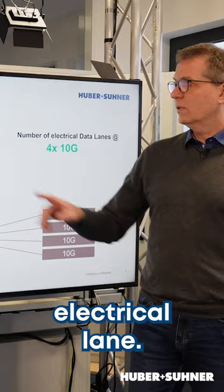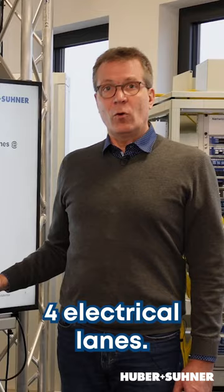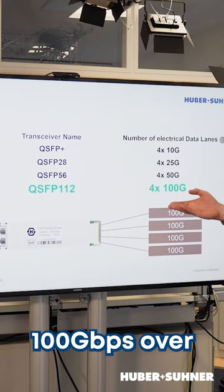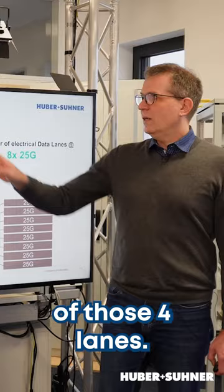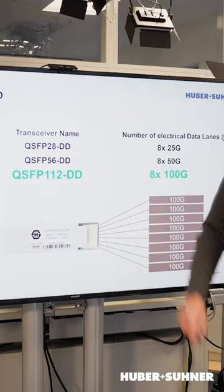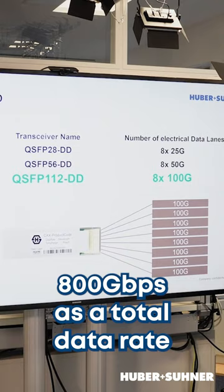The term Q stands for quadruple — four electrical lanes. QSFP112 delivers 100 gigabit per second over every single one of those four lanes. DD standing for double density, because now we have doubled those electrical lanes again into eight. 800 gigabit per second as a total data rate with QSFP112DD.